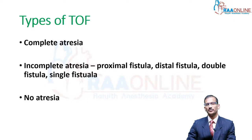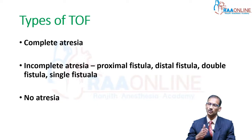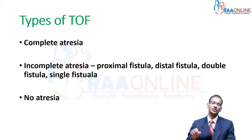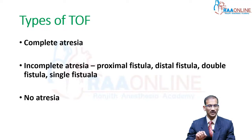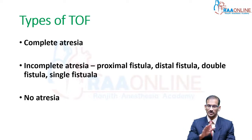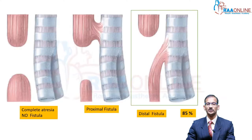When considering tracheoesophageal fistula, they are classified into a few varieties. You could have just a fistula between the trachea and the esophagus, or it could be atresia with fistula. The atresia could be complete or incomplete, or you may not have an atresia at all — just a fistula. I will show diagrams corresponding to each type.